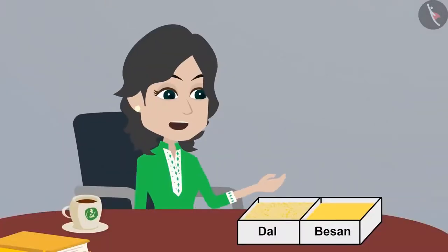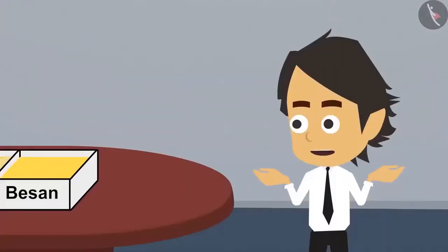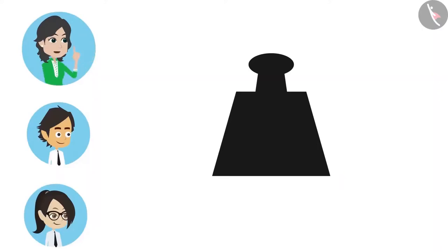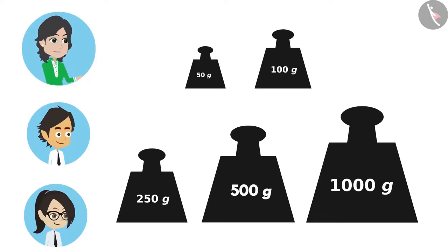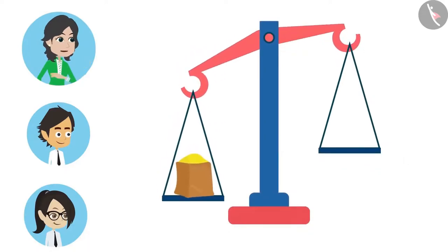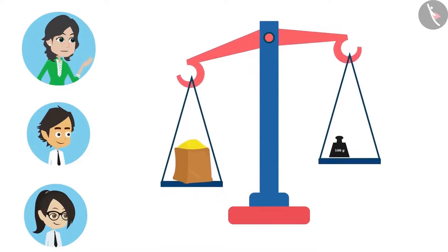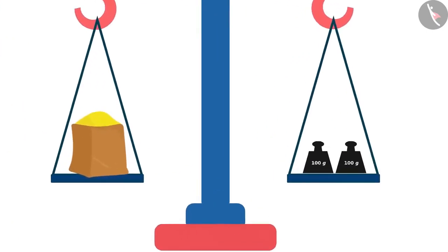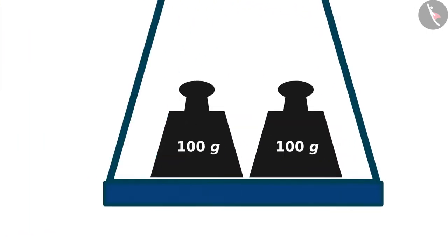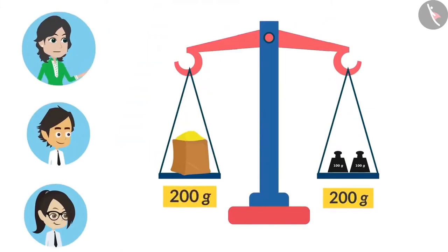We use a scale and weights to measure in grams. What is a weight, madam? Weights are iron pieces of different grams made by taking accurate measurements. Weights come in different measures: 50 grams, 100 grams, 250 grams, 500 grams, 1000 grams, etc. The thing you want to measure is kept on one side of the scale, and one or more weights on the other side. When both sides are in balance, this means the weight on both sides are equal. When both sides are equal, we calculate the weights added — the weight of the item is the same as the weights added.